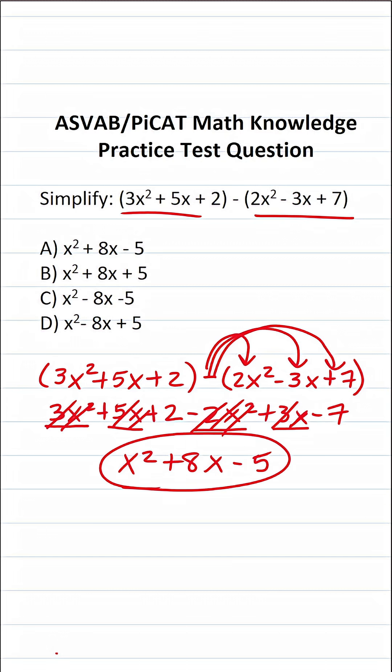All right, so we can't simplify this any further. Our result is x squared plus 8x minus 5, which you can see is answer choice A.